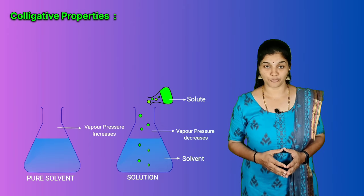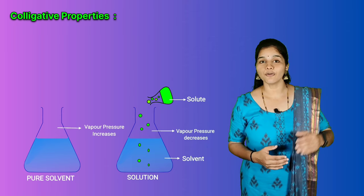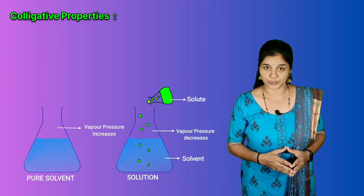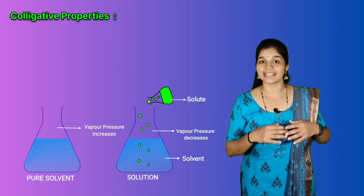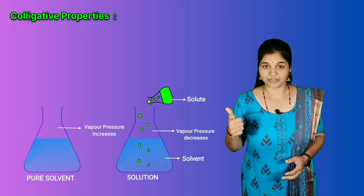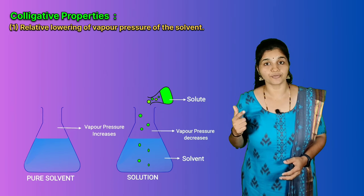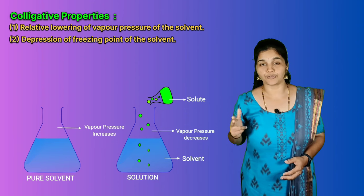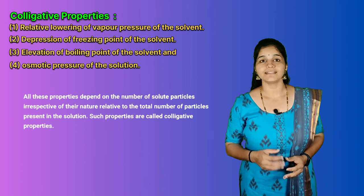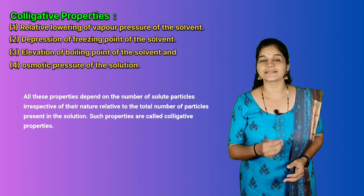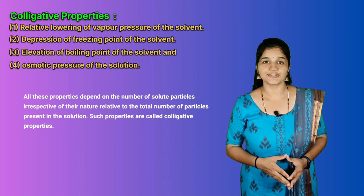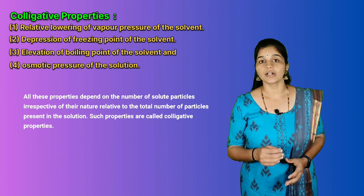You have learned that the vapor pressure of a solution decreases when a non-volatile solute is added to a volatile solvent. Many properties of solutions are connected with this decrease of vapor pressure: relative lowering of vapor pressure of the solvent, depression of freezing point, elevation of boiling point, and osmotic pressure of the solution. All these properties depend on the number of solute particles irrespective of their nature, relative to the total number of particles present in the solution. Such properties are called colligative properties.